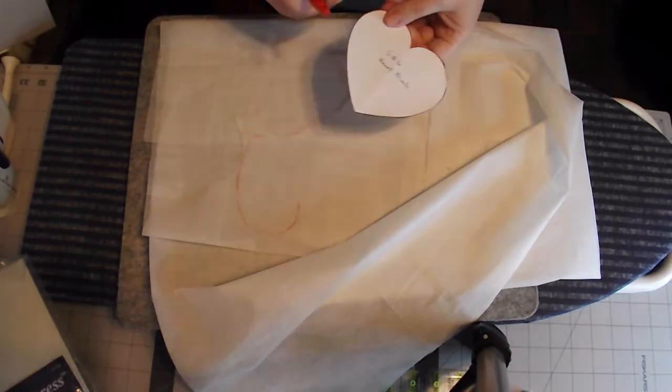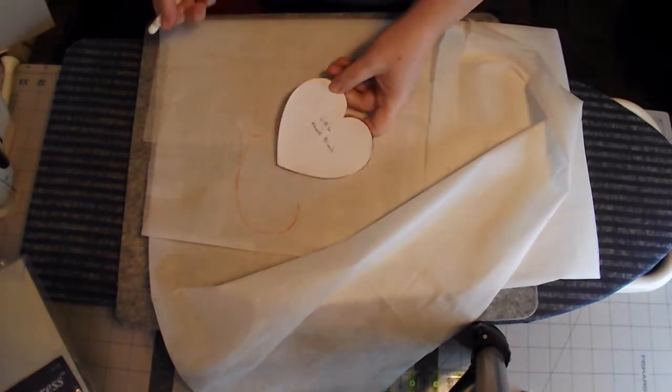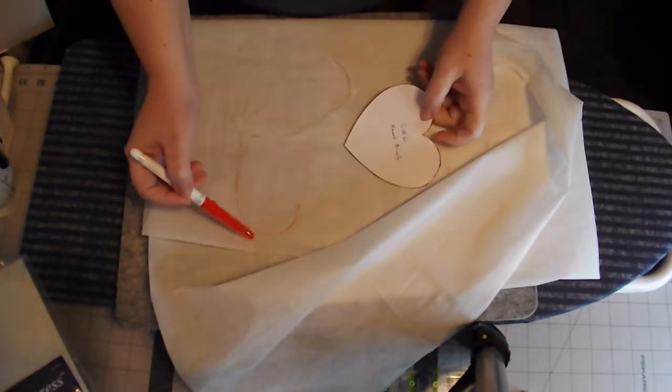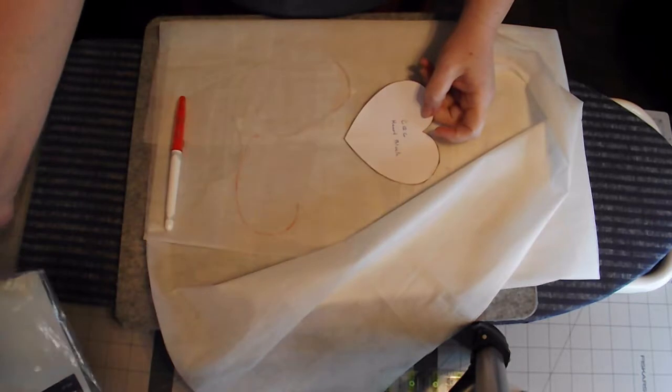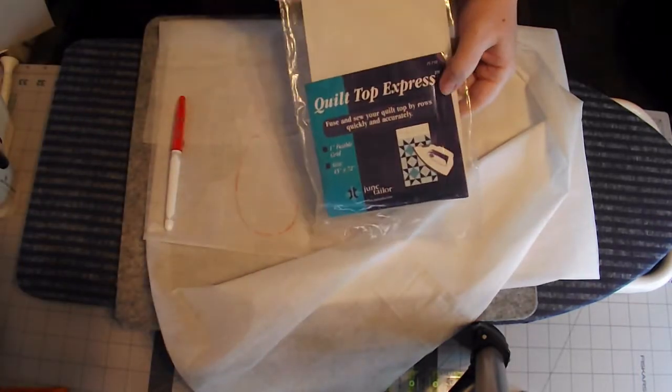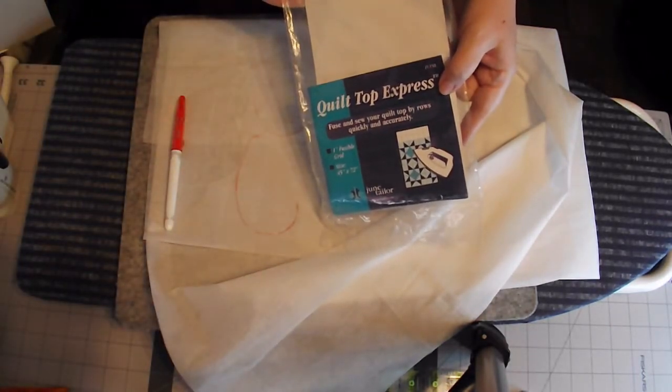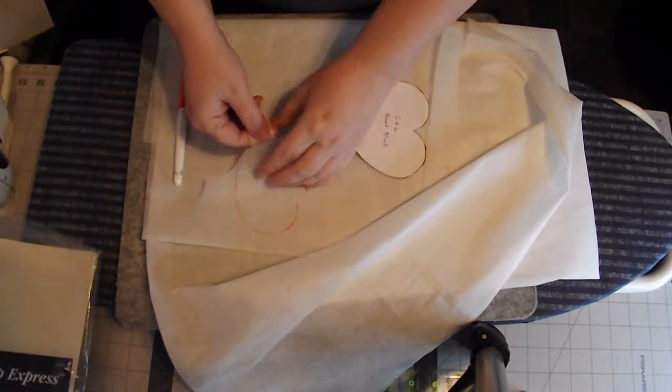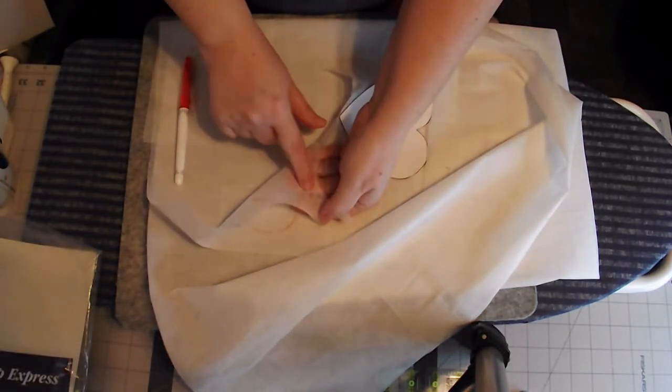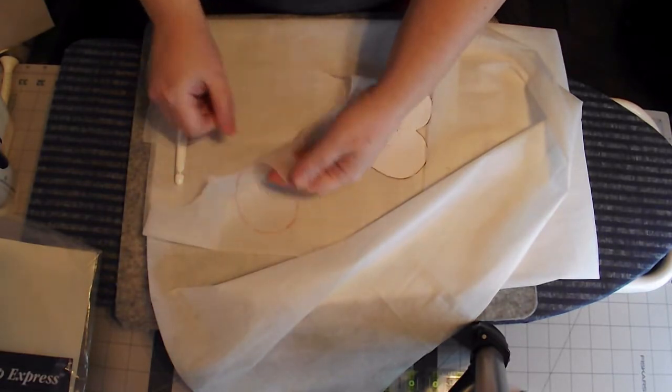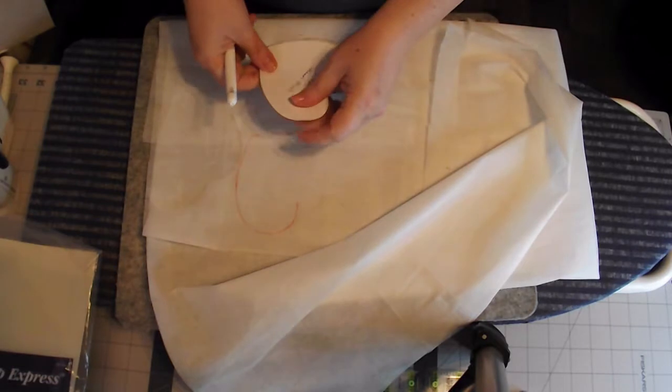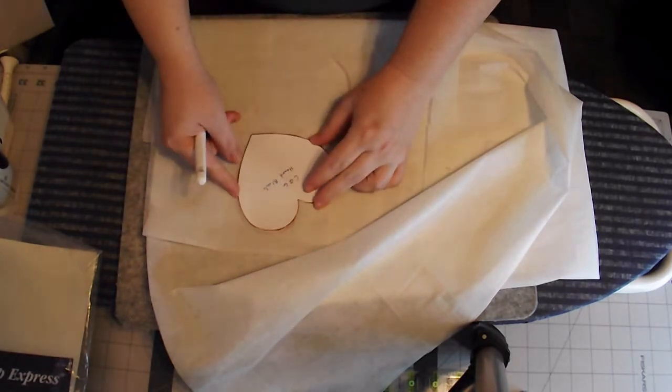We need to trace out the heart block template here. I've begun on this fusible, using Quilt Top Express, which is basically just a fusible that has one side with the little adhesive nubby side. This side is the smooth side. Doesn't really matter which side you mark on, by the way.